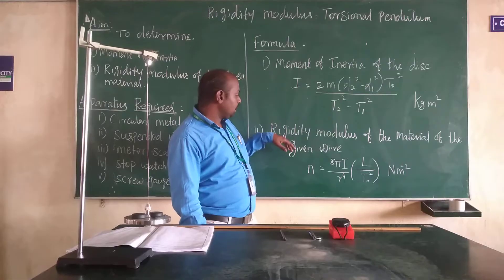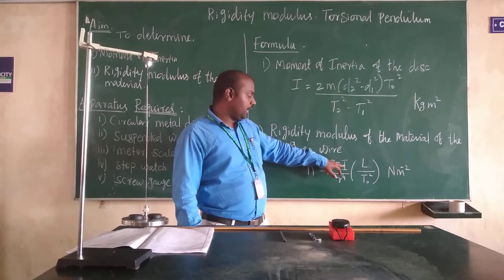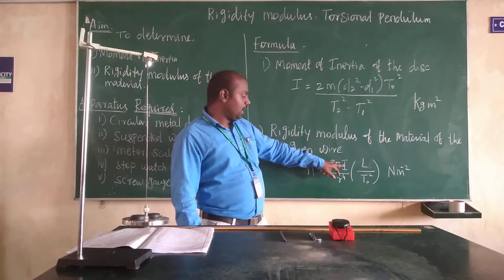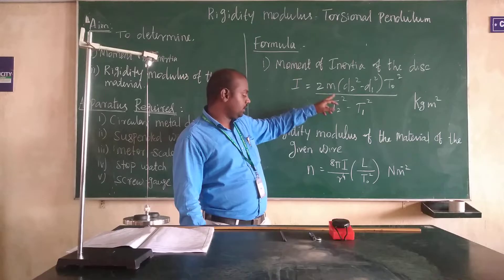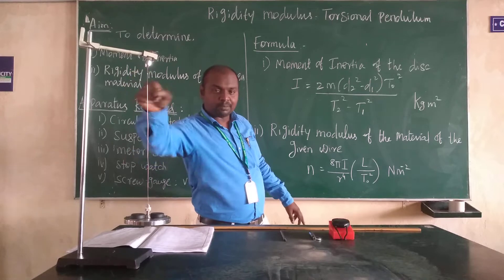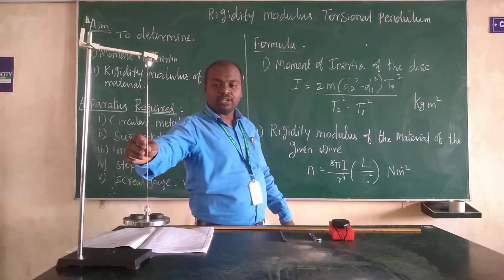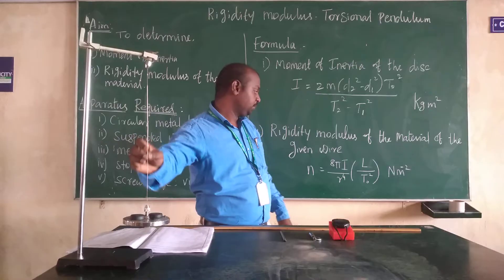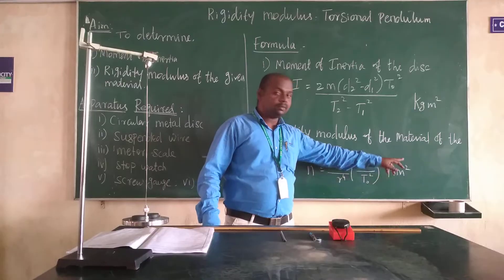The second formula gives the rigidity modulus of the material of the given wire: N = 8πIL / (r⁴ × T₀²). Here I represents moment of inertia obtained from the first equation, L represents the length of the wire, and r represents the radius of the wire measured using a screw gauge. The unit is newton metre⁻².